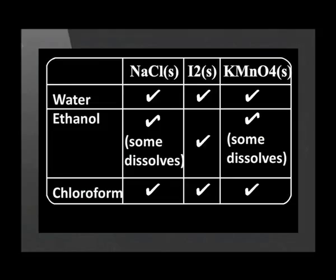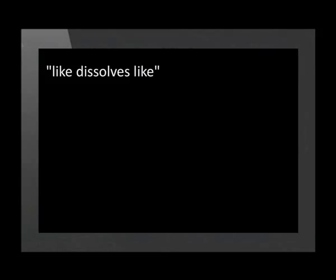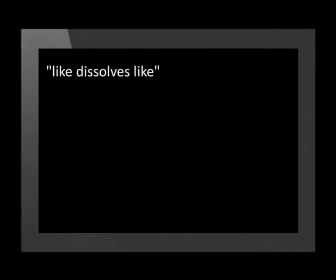Back to the studio to explain our results. Sodium chloride and potassium permanganate dissolve in water and ethanol because they are ionic and dissociate into polar ions. Water and ethanol are both polar, and we know the saying 'like dissolves like.' Iodine is nonpolar and chloroform is nonpolar, so following the like dissolves like rule, iodine dissolves in chloroform.